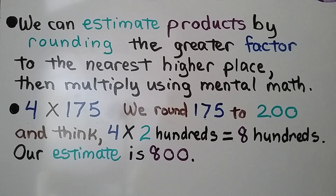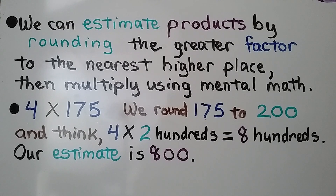For 4 times 175, we round 175 to 200. We think 4 times 2 hundreds, which equals 8 hundreds. So our estimate is 800.